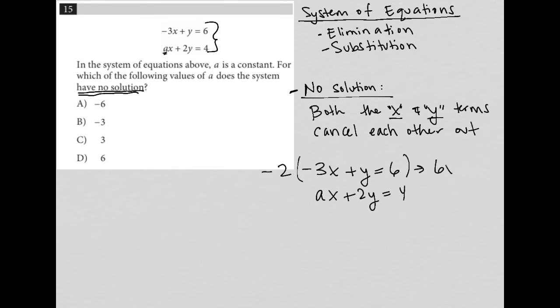That would make this positive 6X minus 2Y equals negative 12, and I'd still have AX plus 2Y equals 4 in my second equation.